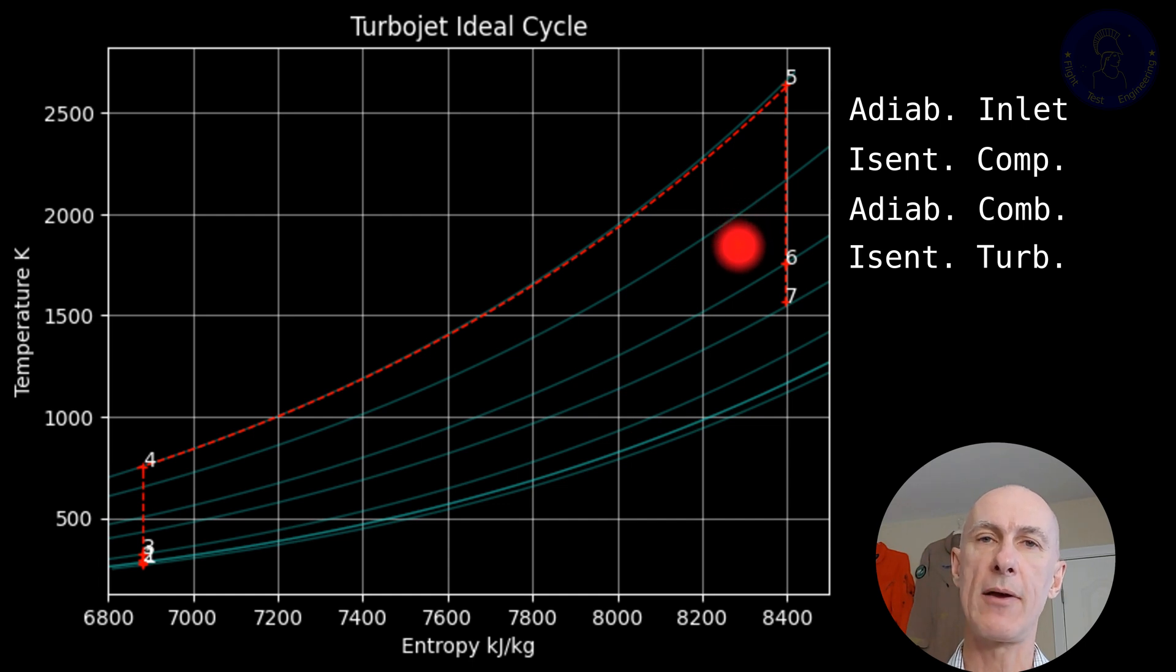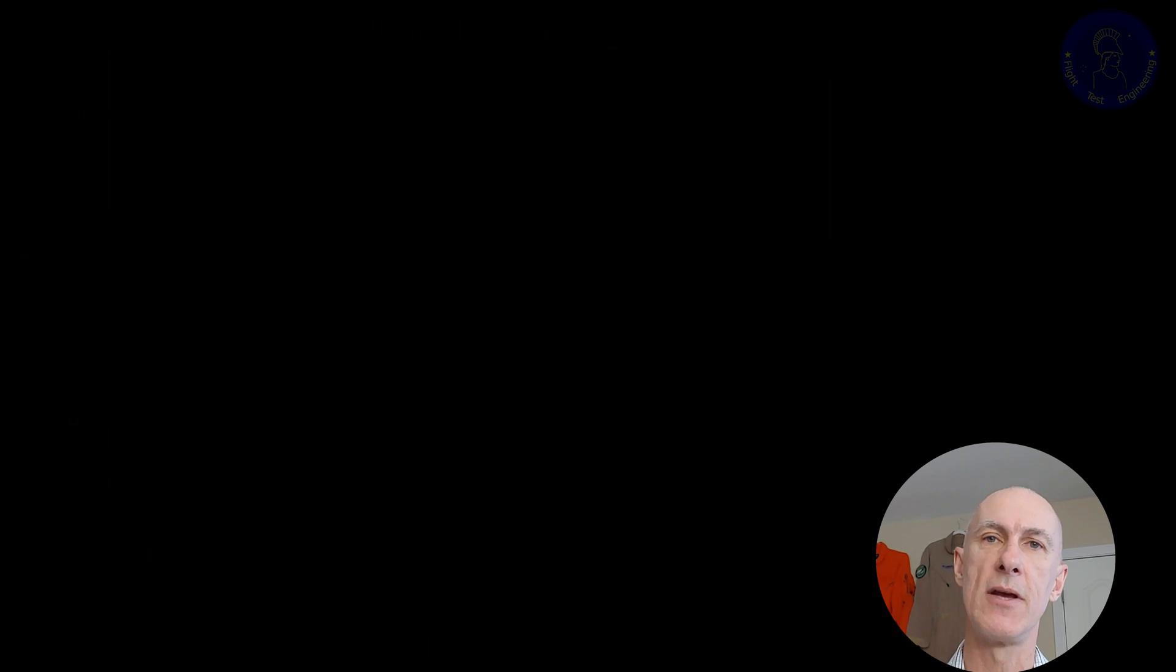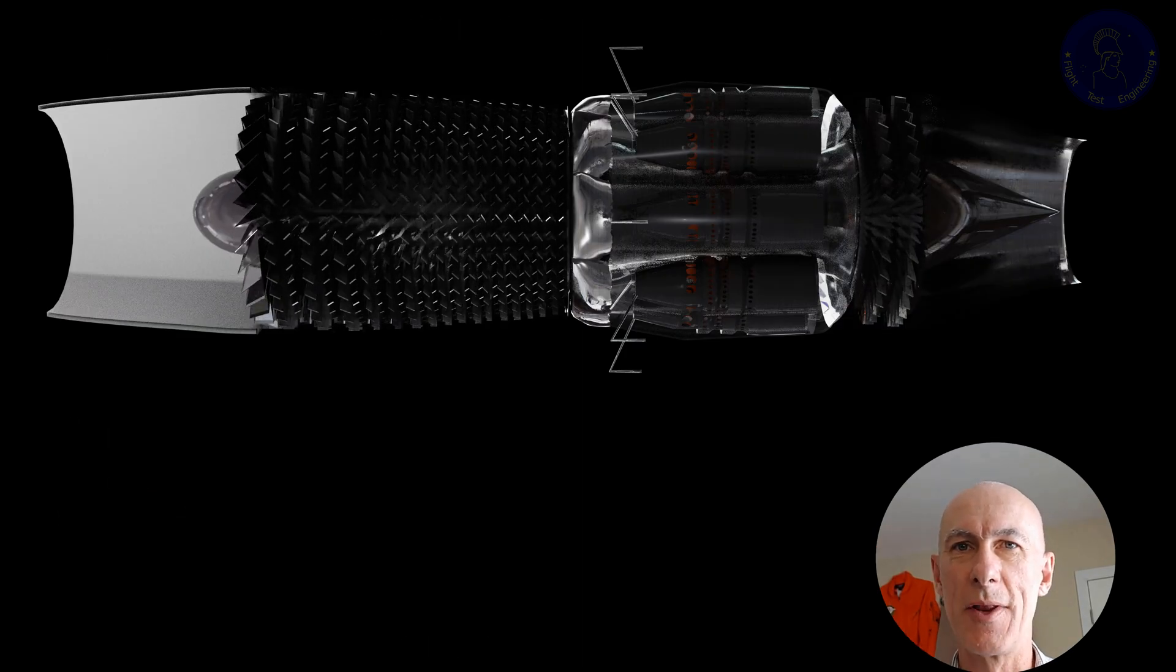Then we expand the gas through the turbine, and during this expansion the temperature drops as expected. And like we said, of course, this is an ideal cycle with no losses. But that's very far from what really happens.